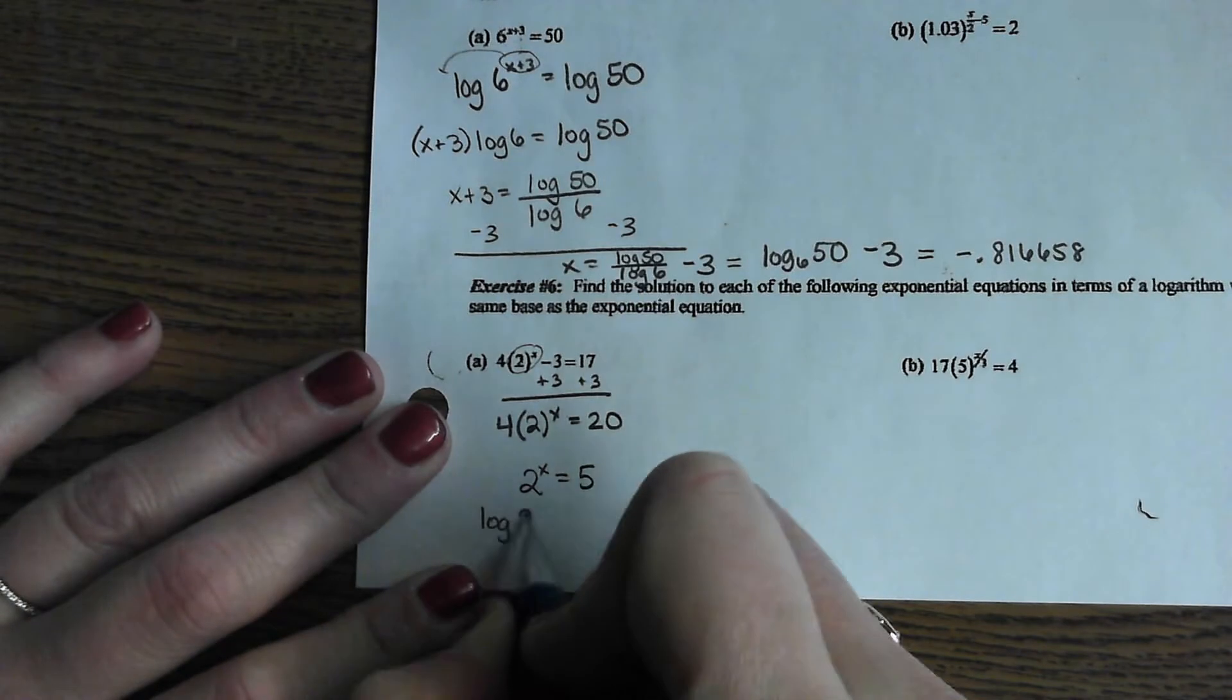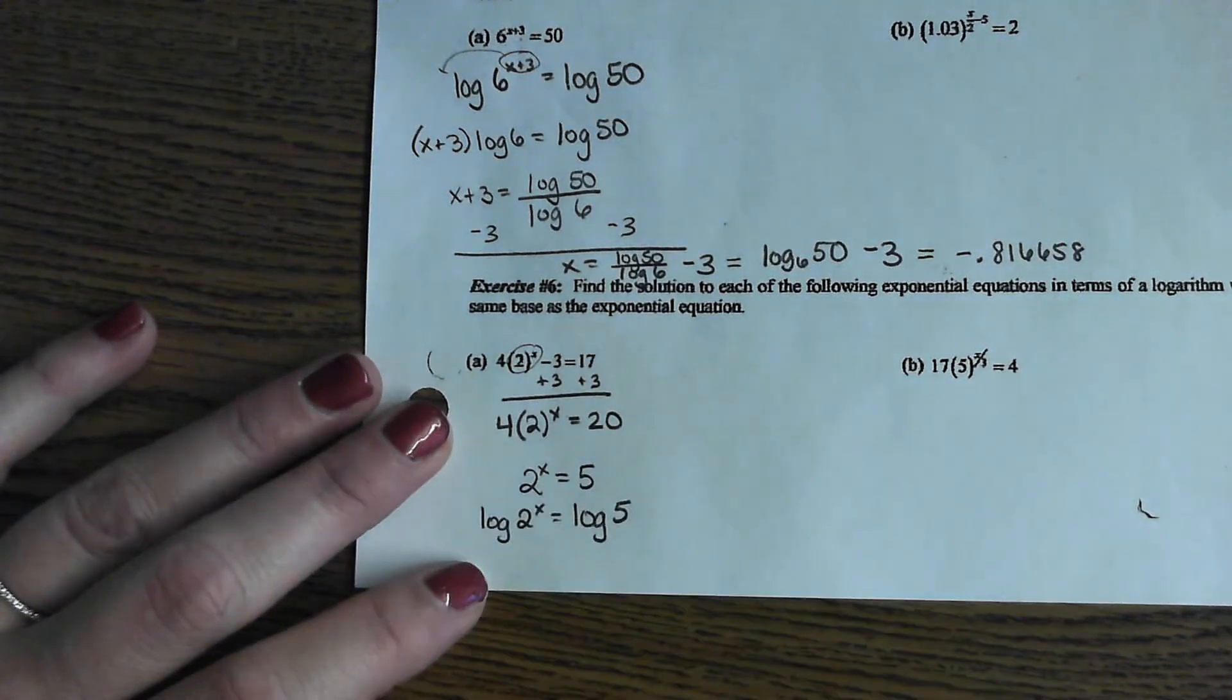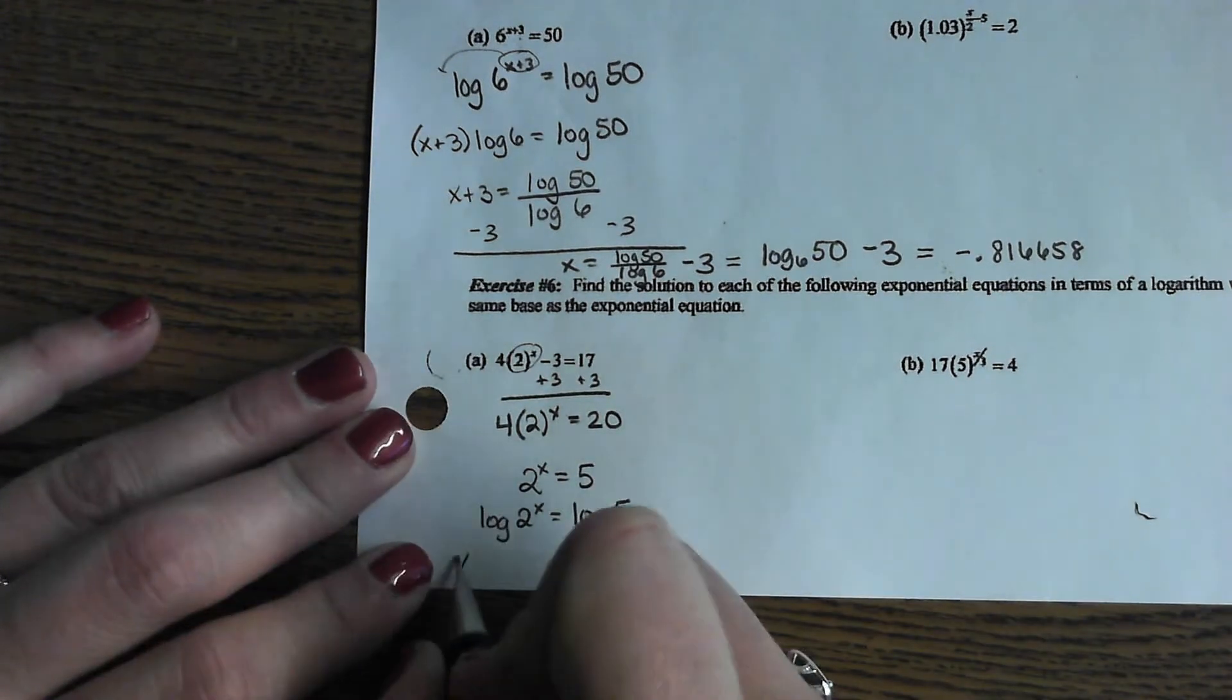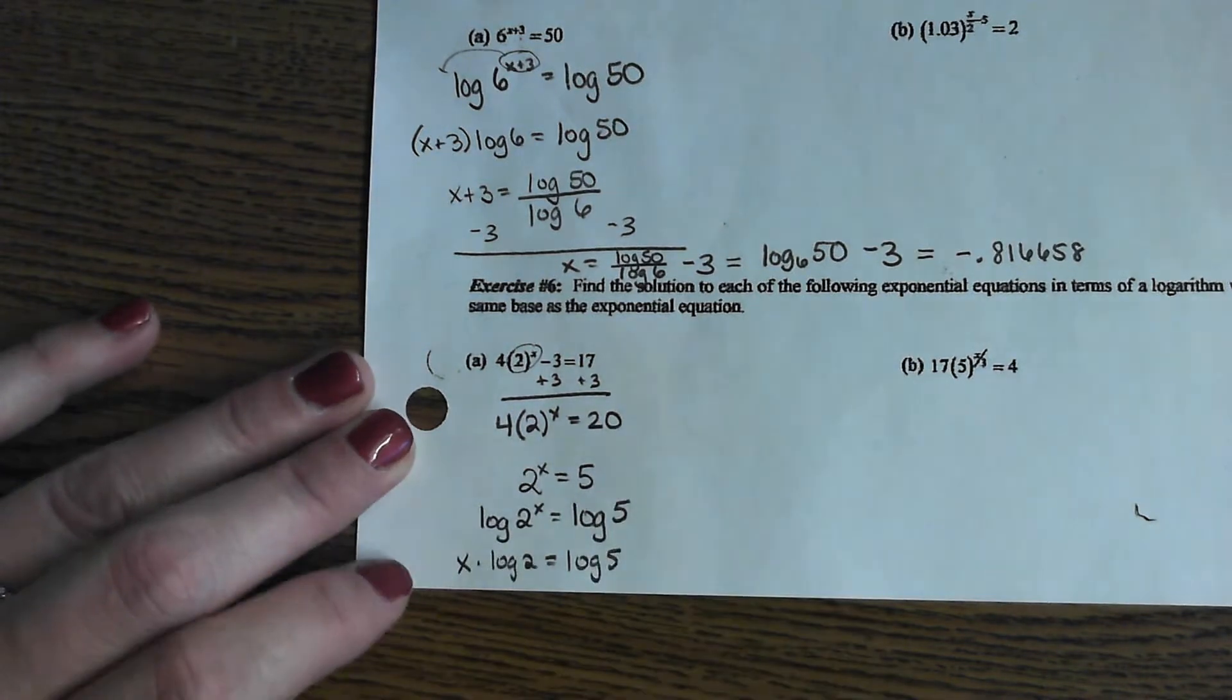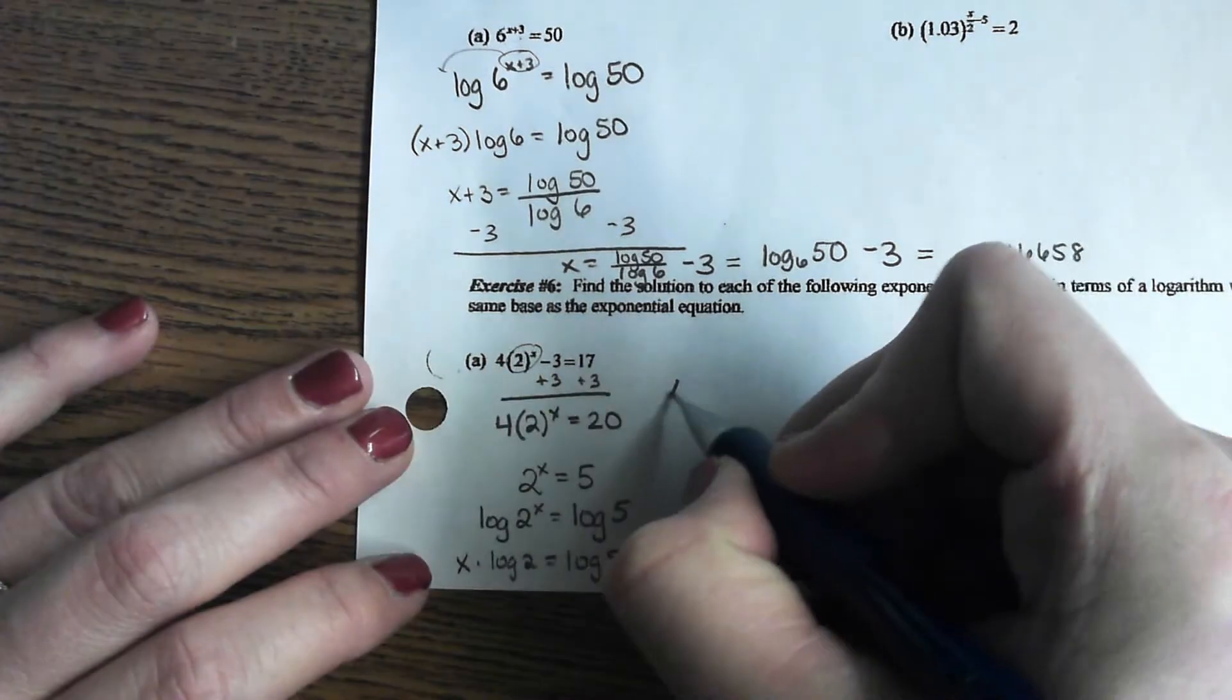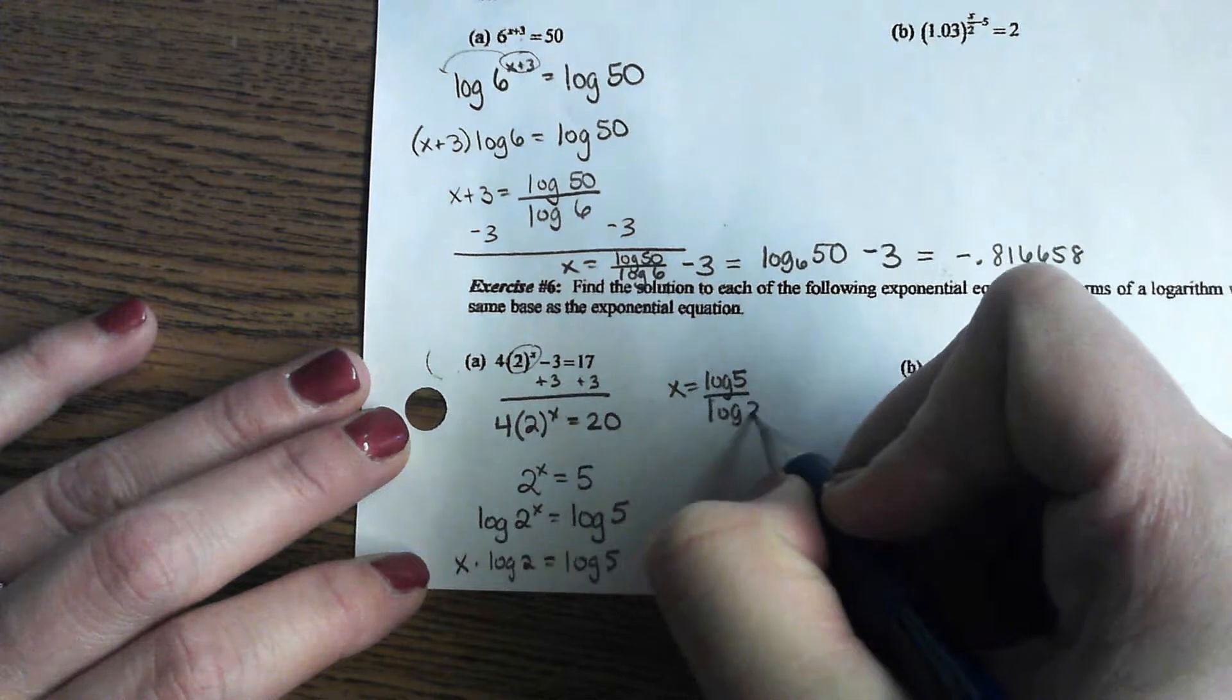Log both sides. Yeah. So it's going to be log of two to the X equals log of five. Vince, what comes next? Move the X in front of the log. Very good. And Eric, what comes last? Good. So X equals log of five divided by log of two.